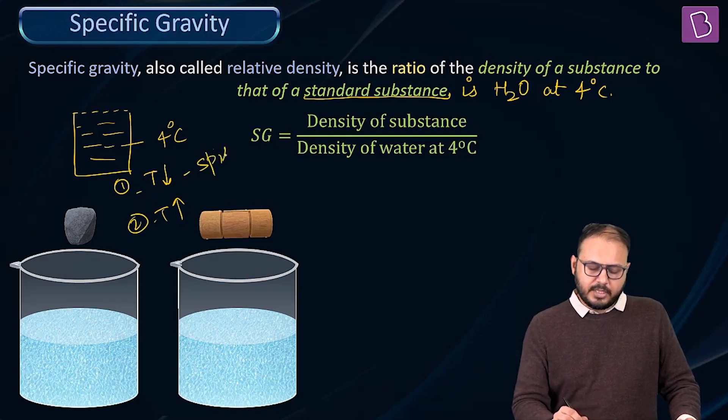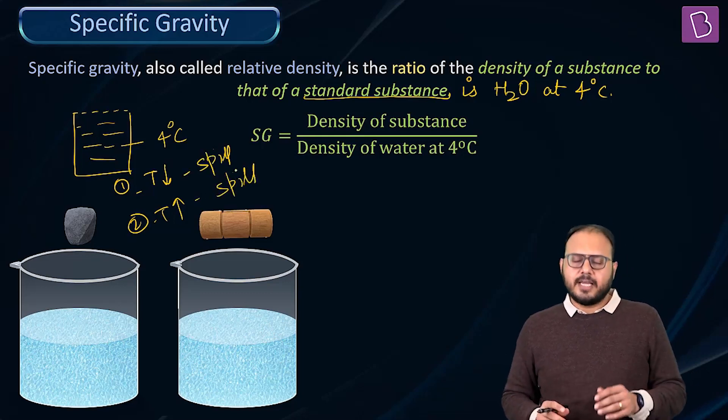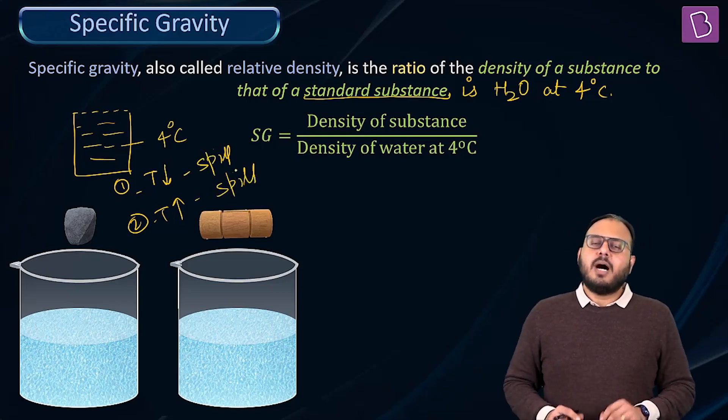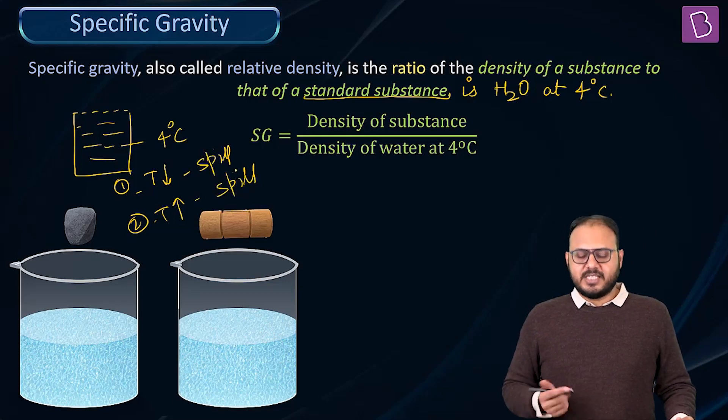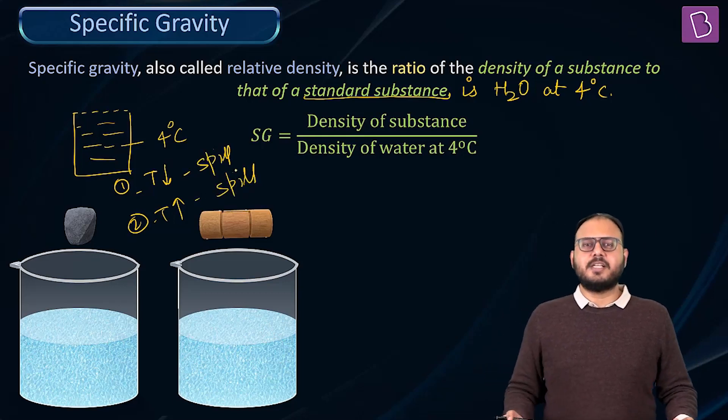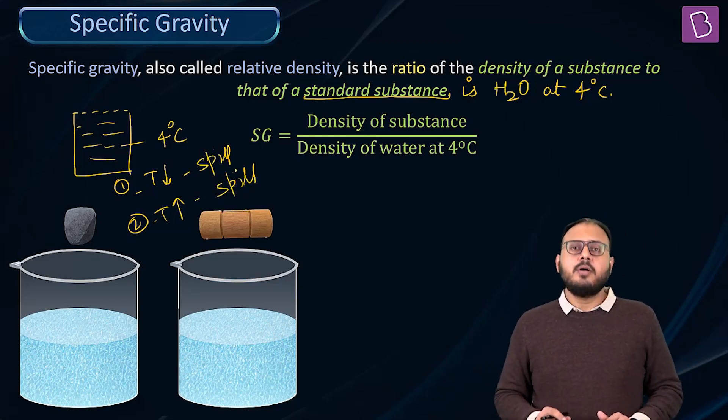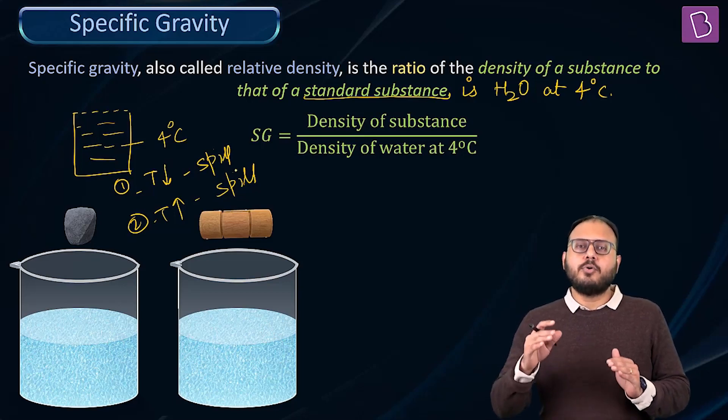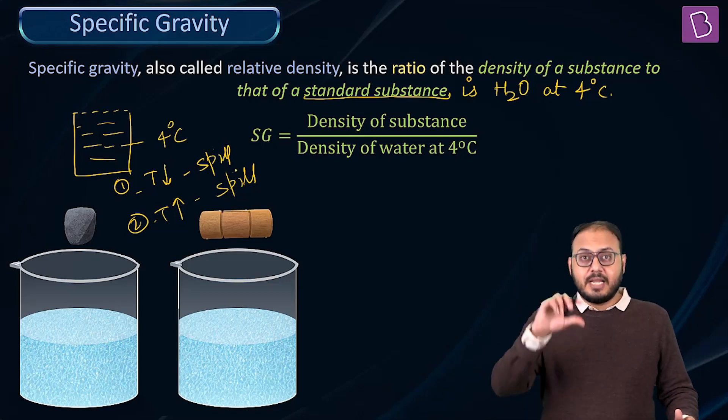Boss, in both the case the water will spill out. What? Yes, sir. Mass remains constant. Density is highest at 4 degrees Celsius. That means whether you go up of 4 or you go down of 4, the density will decrease.